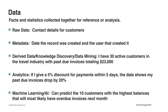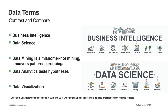Let's also talk about some overarching data and digital transformation terms. Business intelligence (BI) and data science are probably terms you've heard. A useful way to think about them: business intelligence is usually backward looking and data science is usually forward looking. Other terms include data mining — which is a misnomer; it's really about uncovering patterns and groupings — and data analytics, which tests hypotheses or questions. Data visualization can be anything: KPIs, patterns, reporting, analytics — anything that helps your organization operate better. Check out Luke Rochester's sessions in 2015 and 2018, which stack up FileMaker and business intelligence with regard to the different levels and tools.